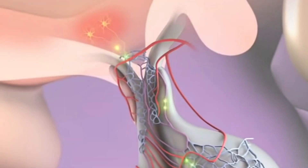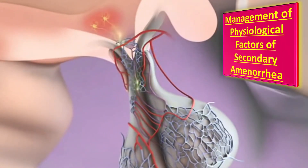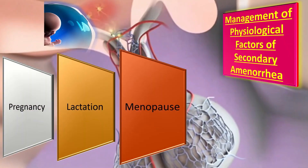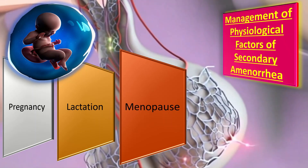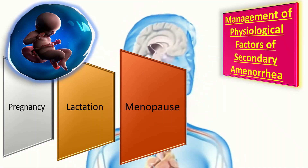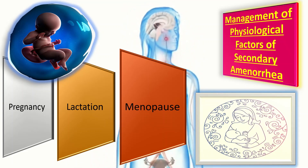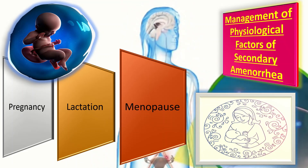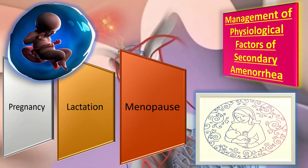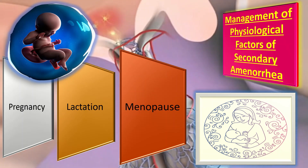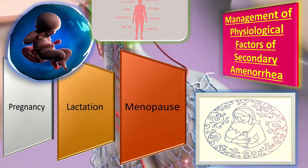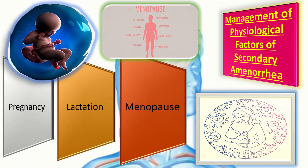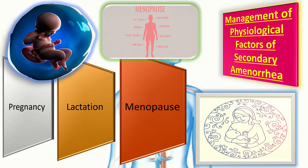Let us first discuss the management of physiological factors of secondary amenorrhea. First, pregnancy: if on clinical history and urine pregnancy test we find out that the patient is pregnant, then we will provide appropriate antenatal care to that patient. Second is lactation: some patients present with secondary amenorrhea in the lactation period — we just need to reassure that it provides contraception in 98% of cases for the period of lactation, which provides adequate time to the mother to look after her baby. Third is menopause: secondary amenorrhea in menopause is also physiological and we just need to reassure the patient.